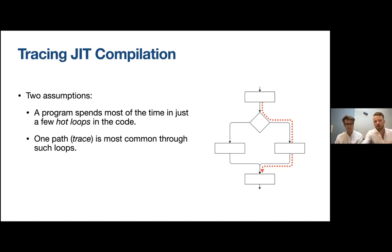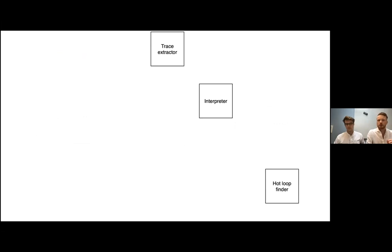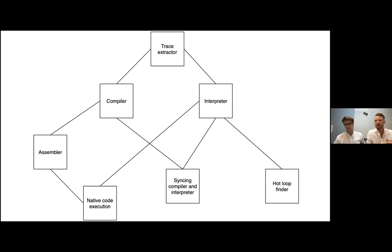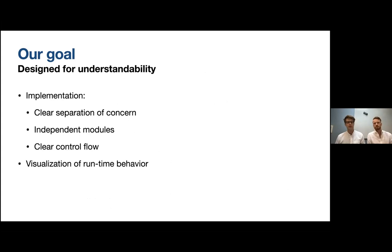A tracing just-in-time compiler has many parts that all need to work together: it needs an interpreter for non-compiled code, a way of finding hot loops, the ability to extract traces from those loops, a compiler for those traces, a way of executing traces natively, and since we have two modes — native execution and interpretation — a way of syncing these states together. This makes a tracing just-in-time compiler quite complex. Commercial tracing JIT compilers like the one formerly used in Mozilla's SpiderMonkey are built with efficiency and performance in mind, which further complicates them.